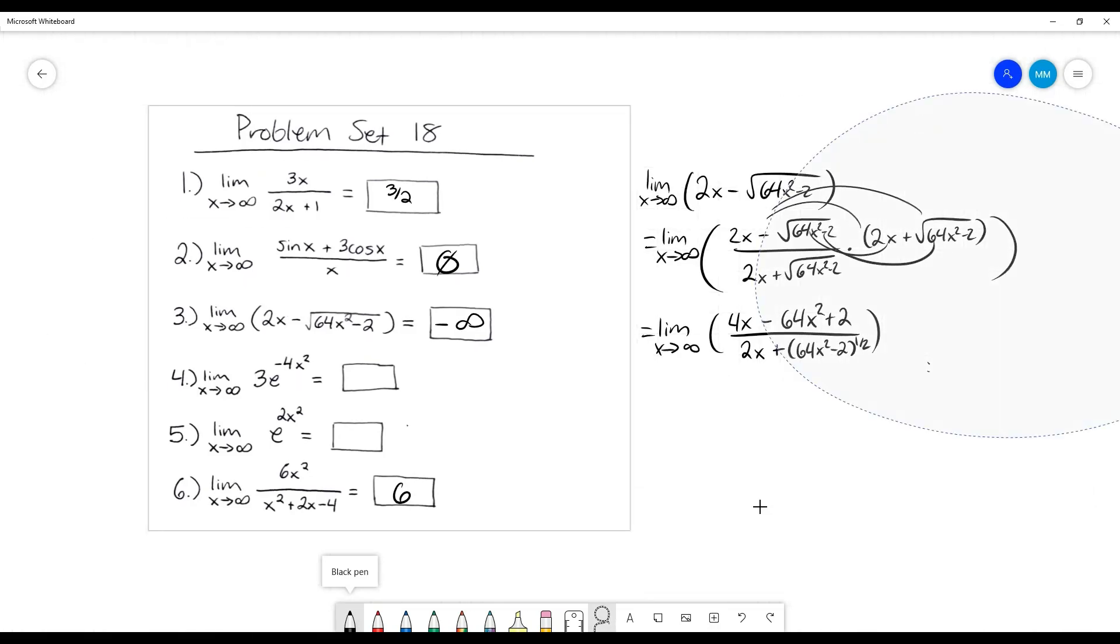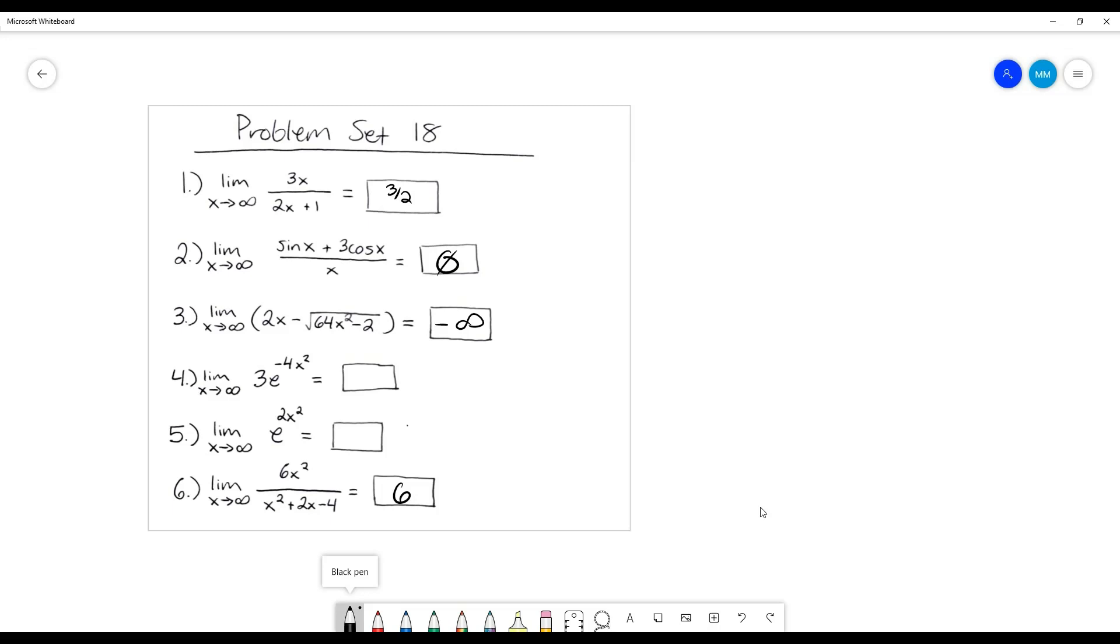For number 4, we have the limit as x approaches infinity of 3e to the negative 4x squared. And, again, this power is increasing and increasing all the way infinitely, right? So you would expect e to be increasing, except this is a negative power. So what that means is I can rewrite it as this. Which means my denominator is increasing and increasing and increasing forever, while my numerator stays the same. Which is going to, I believe, approach 0.